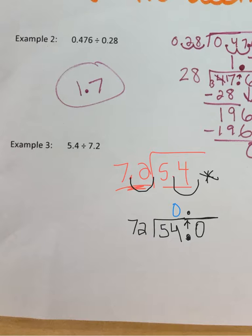Now I can think about this problem as 72 going into 540. 72 goes into 540, I'm not sure how many times, but I can estimate. I'm going to pretend that's about 70. I'm going to pretend this is about 500. Now, if I count up by 7s,